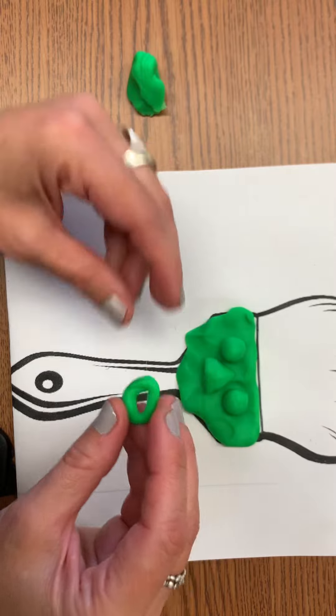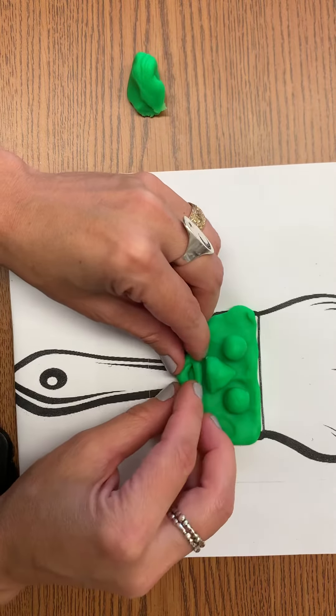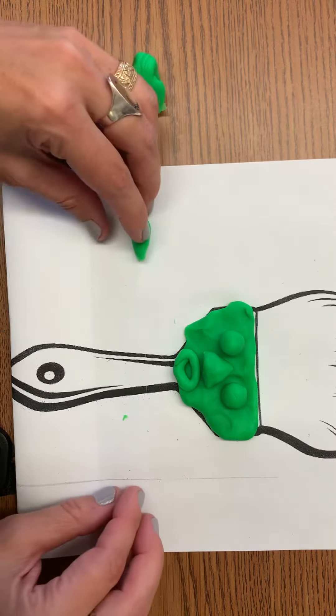This is called a coil or snake. And I'm going to place it here so I can see where I want. Oh, I love it.